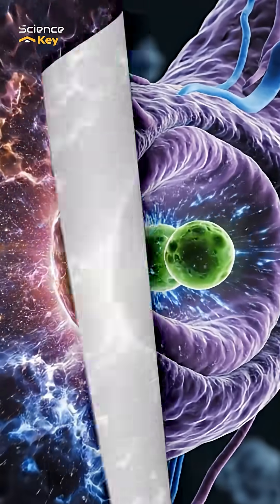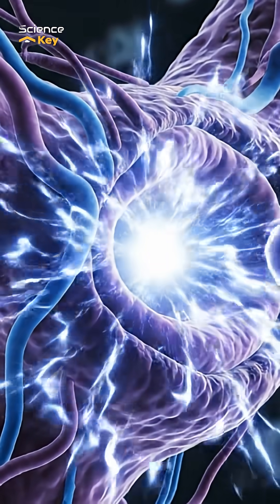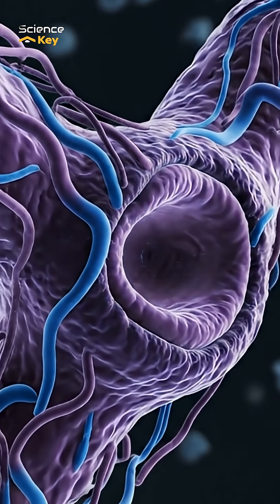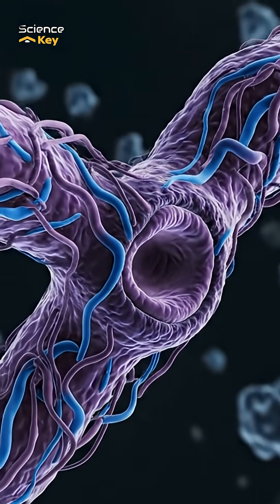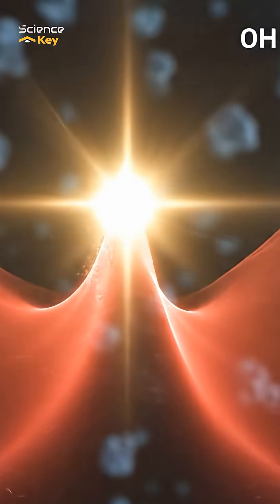Inside your cells, enzymes rely on tunneling. Protons and electrons pass through energy barriers instead of over them. This makes chemical reactions millions of times faster.